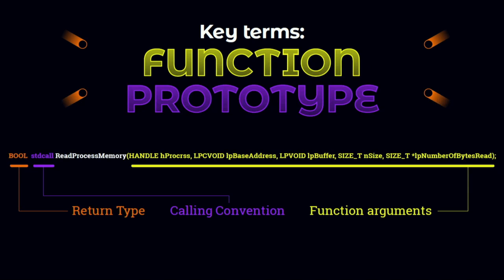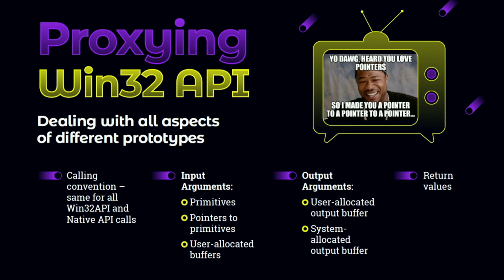Every API function consists of three main properties: the return value type, the calling convention, and the function arguments. The return value type can be either primitive, a well-known structure, or a pointer. The calling convention defines how arguments are passed from caller to callee, and every argument can also be a primitive, a well-known structure, or a pointer — treated as input, output, or both. To proxy a system call we need to handle each of these properties by serializing and deserializing them on both the attacker and target sides.